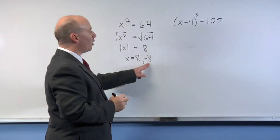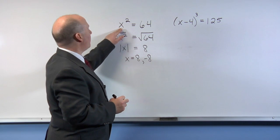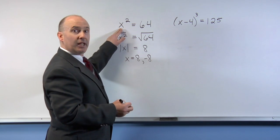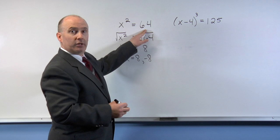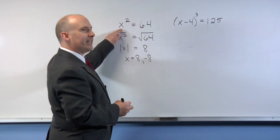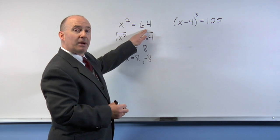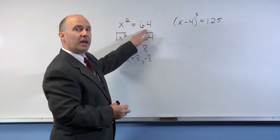We can check our work by plugging in the value 8 in for x, so that we have 8 squared, 8 times 8, equals 64. Similarly, with negative 8, if we take negative 8 times negative 8, two negatives make a positive when you multiply, we get positive 64.